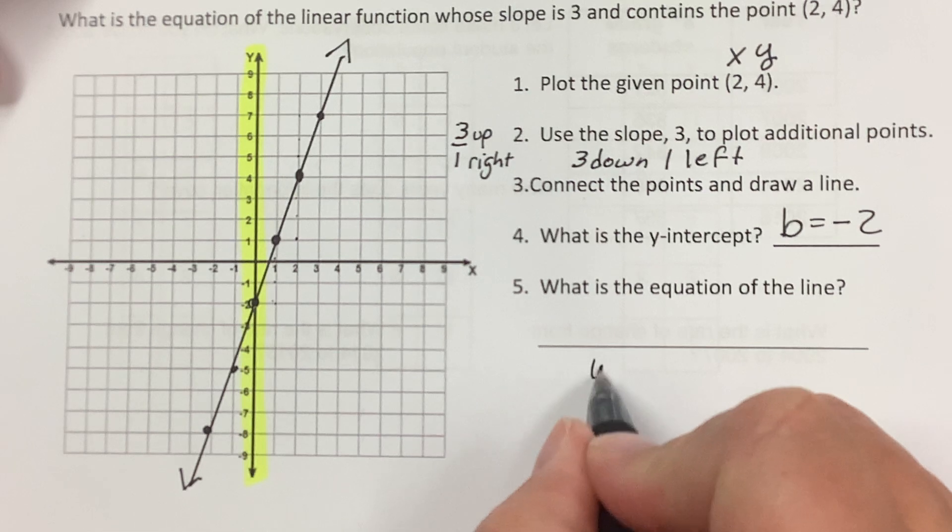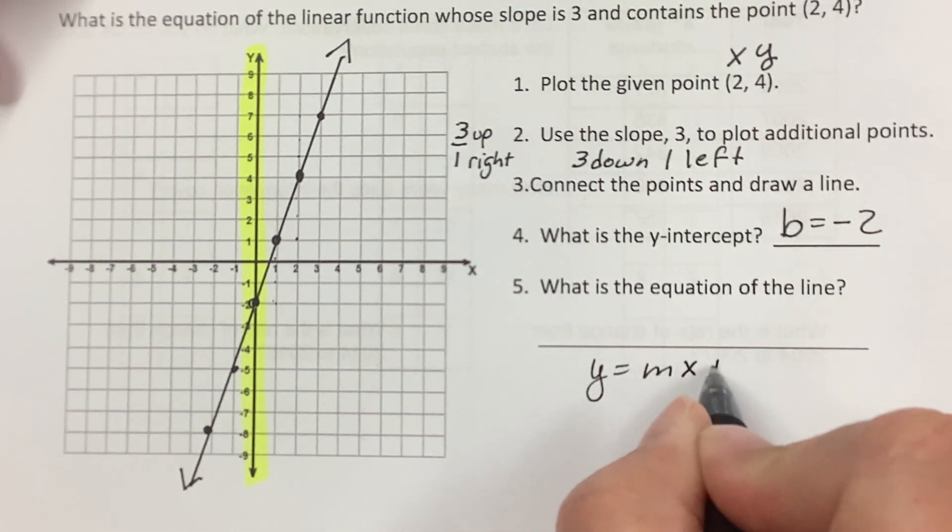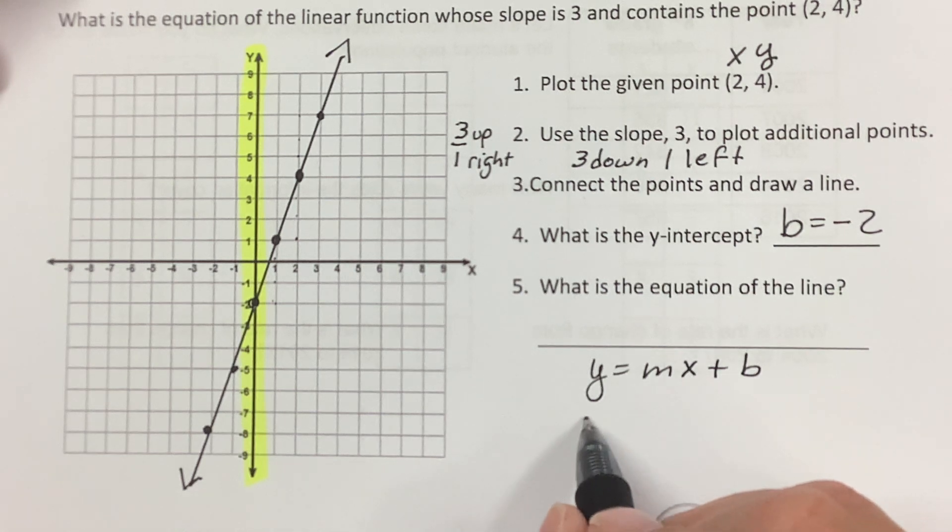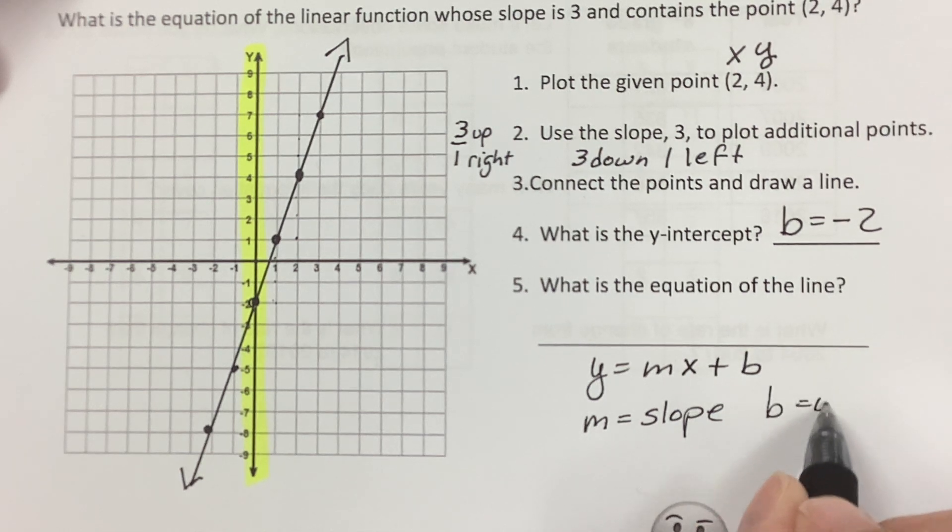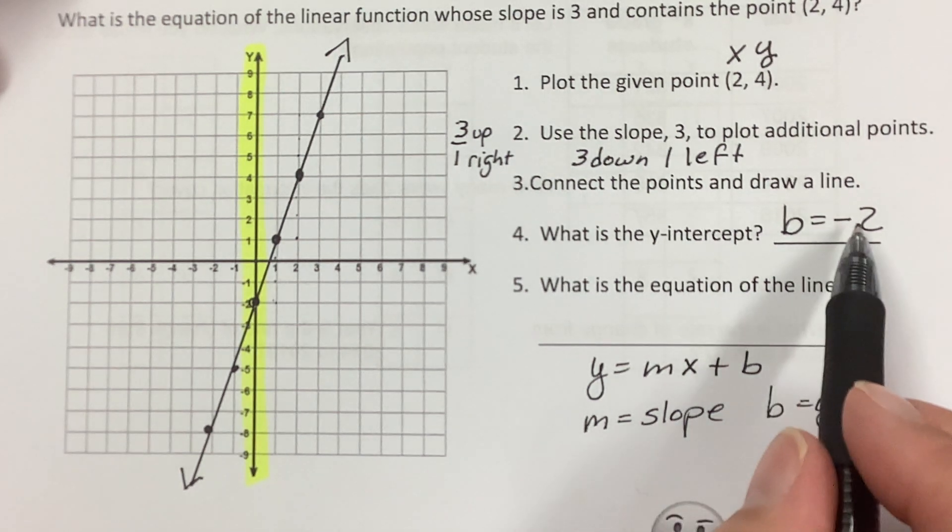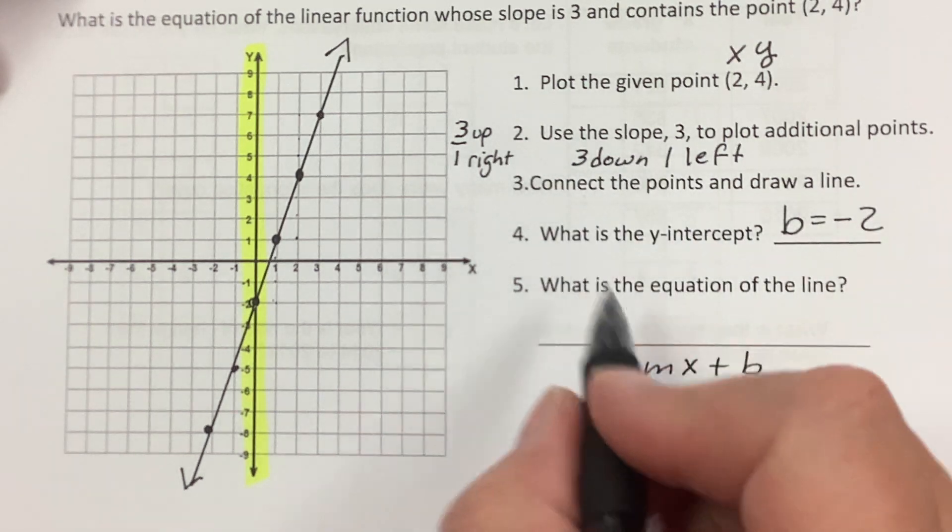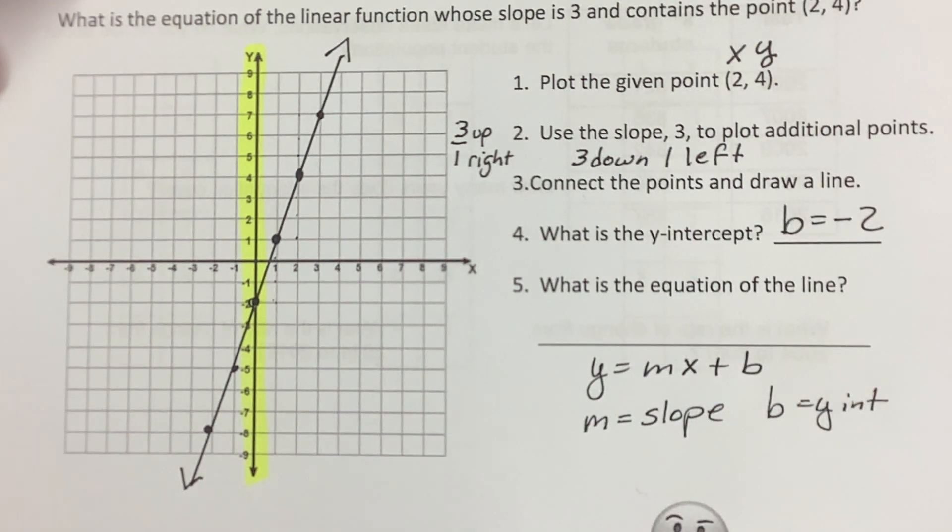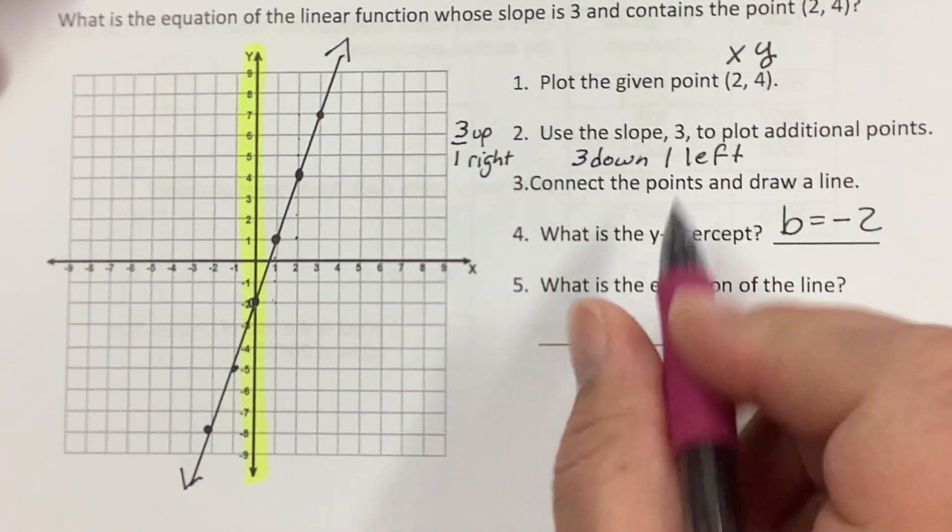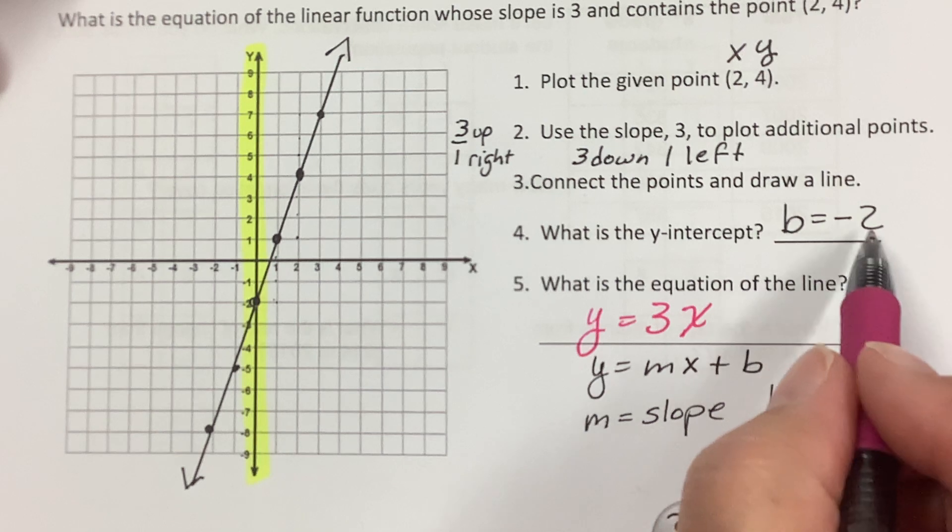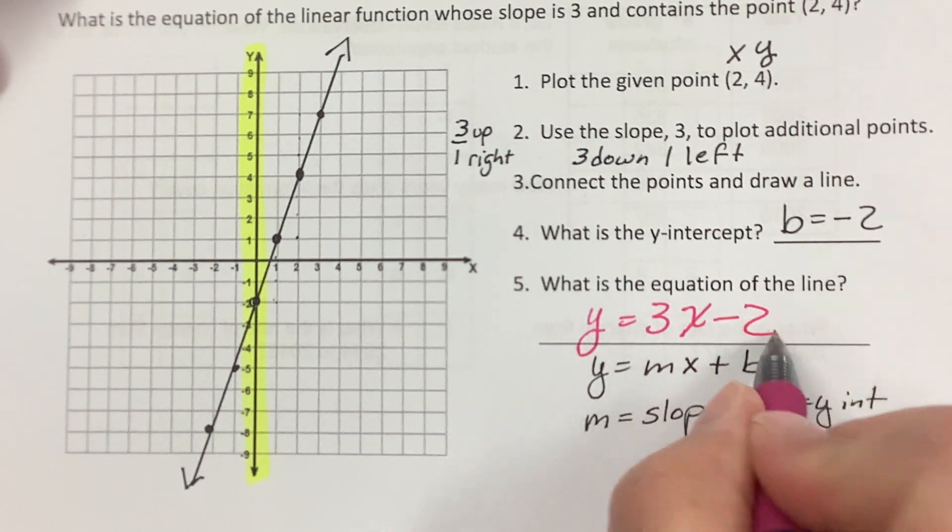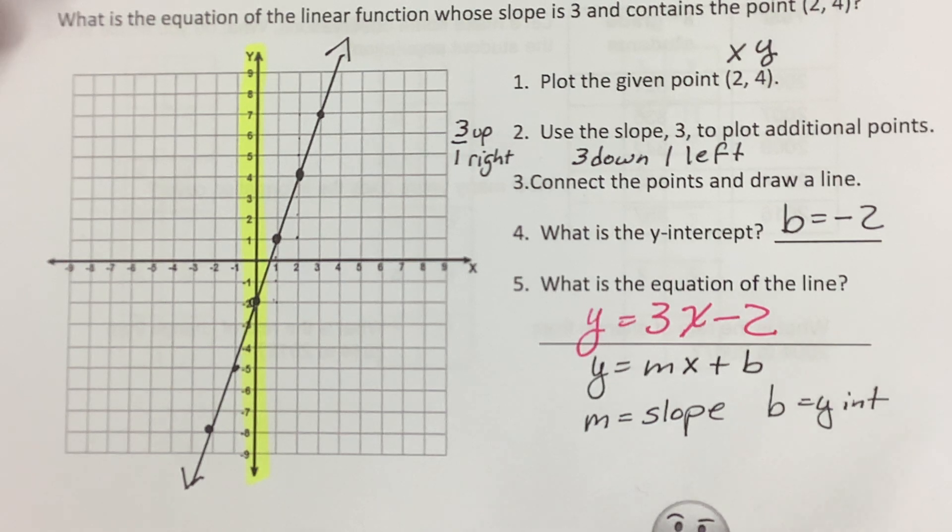Well, an equation of a line is y equals mx plus b, where m is the slope and b is the y-intercept. So b is negative 2 and m is the slope 3. So my equation is y equals 3x. Don't forget the x. But I'm not going to write plus negative 2, I'm just going to write minus 2, because plus negative 2 and minus 2 are the same. So my equation is y equals 3x minus 2.